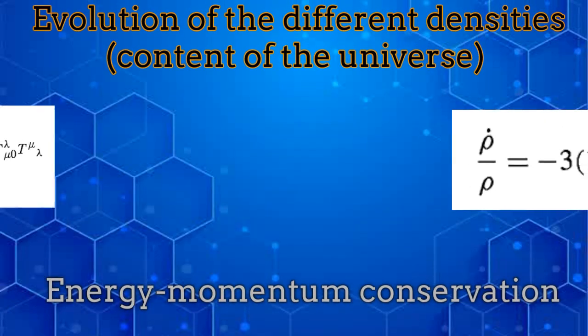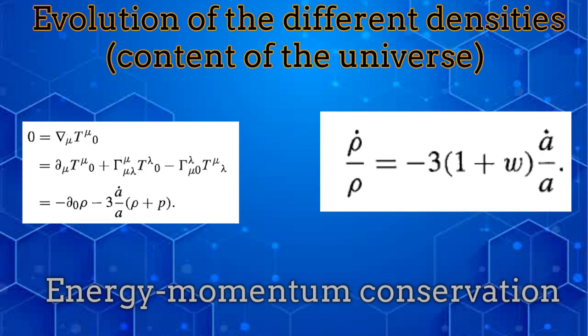If, in addition, we consider the energy momentum conservation by using the Robertson-Walker metric, then we can obtain the evolution of the different components of densities of the universe.